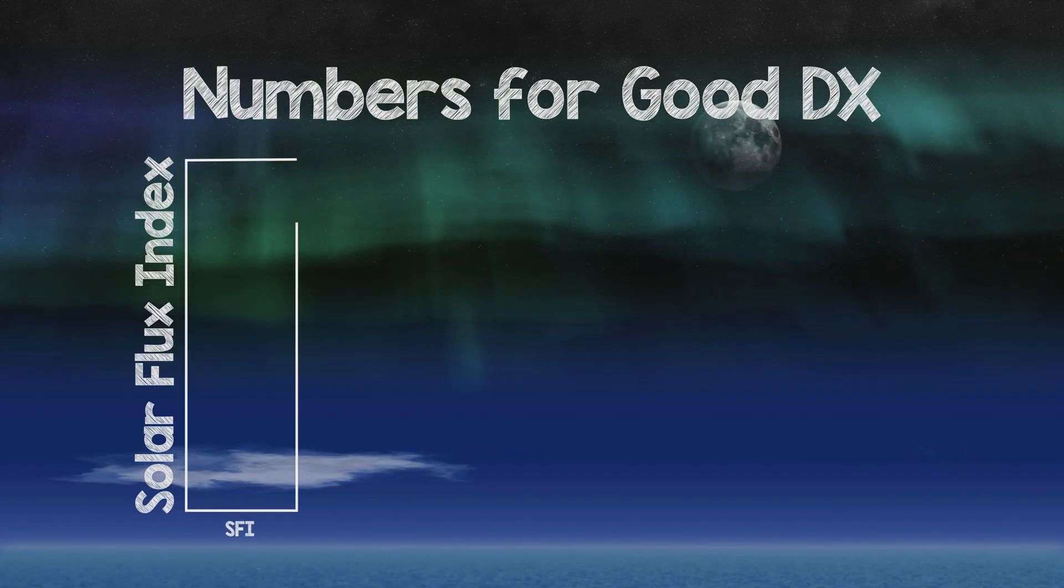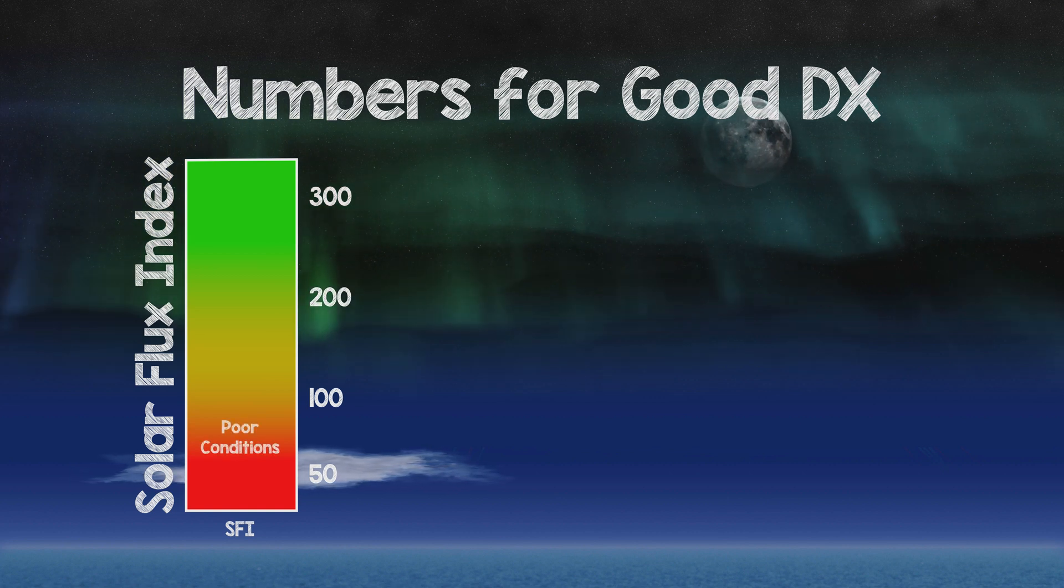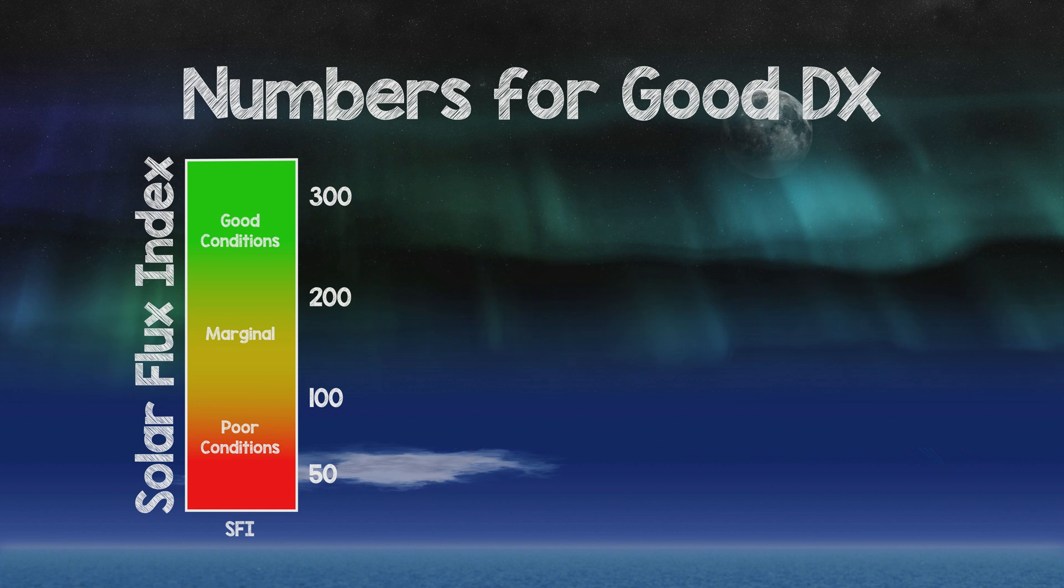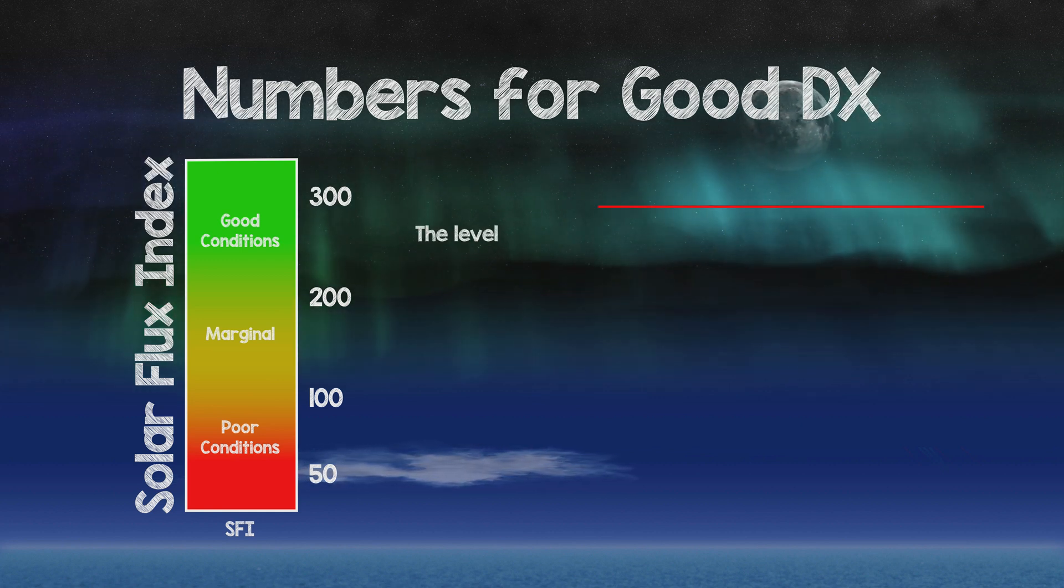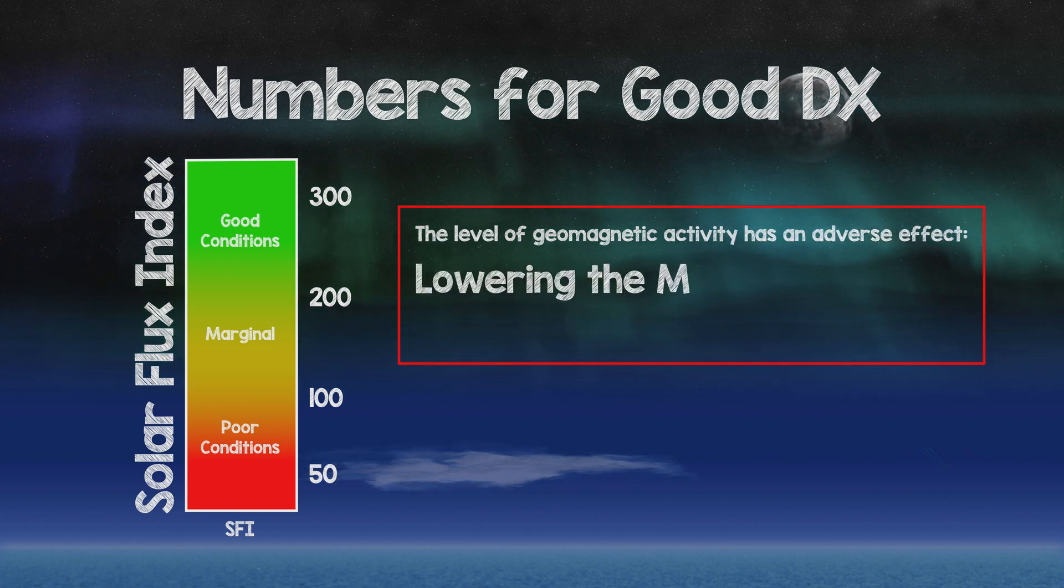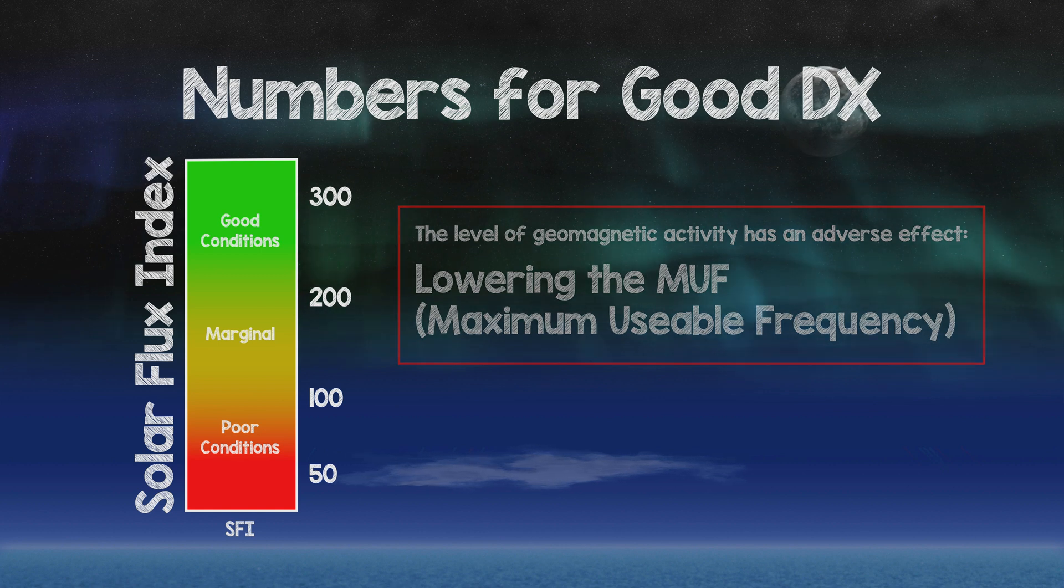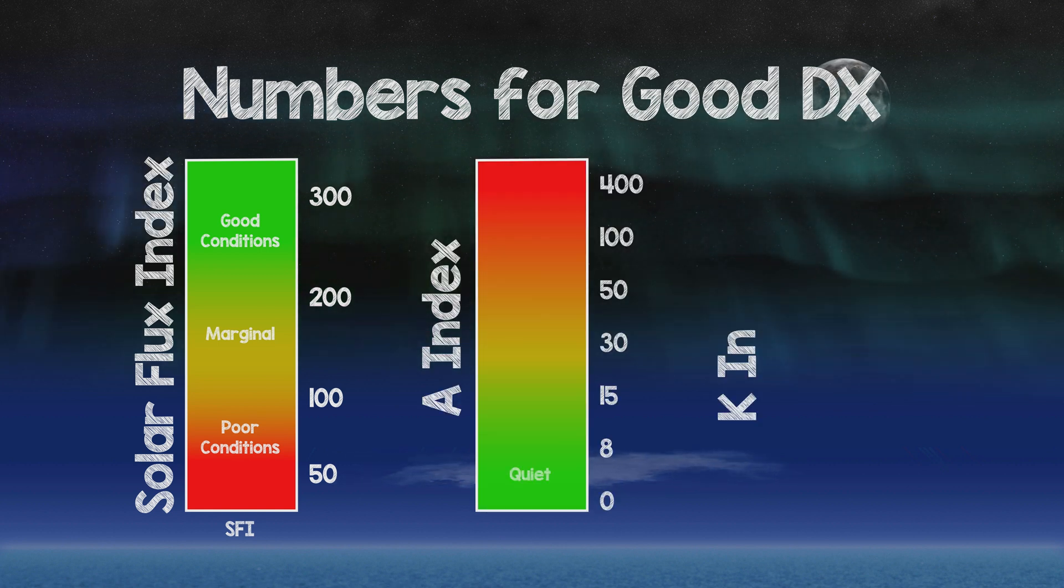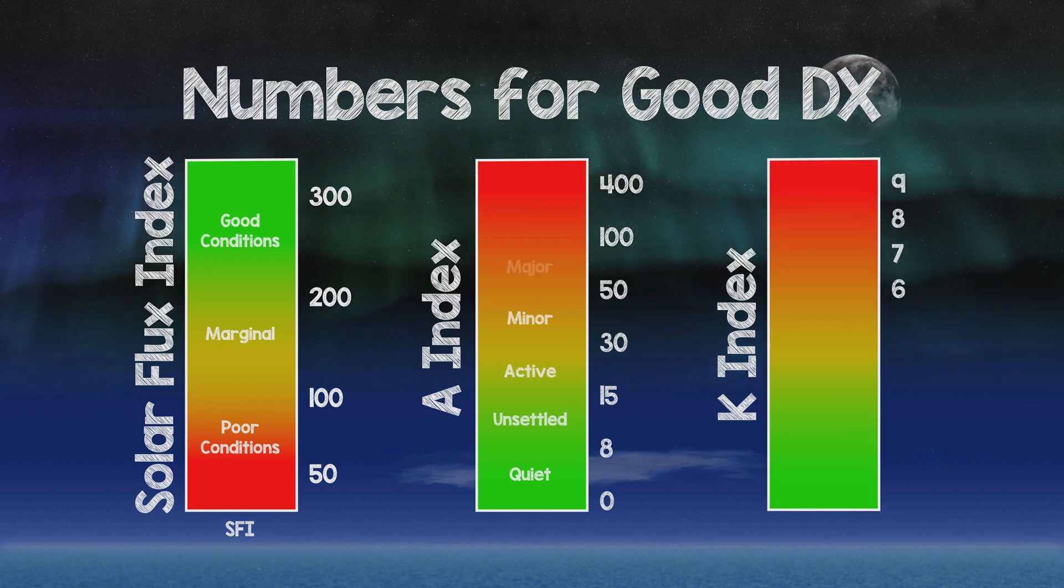Typically, values of 150 and more will ensure good HF band conditions, although levels of 200 or more will ensure they are at their peak. The level of geomagnetic activity has an adverse effect, lowering the maximum usable frequencies. The higher the level of activity, as reflected in the AP and KP indices, the greater the depression of the maximum usable frequencies.